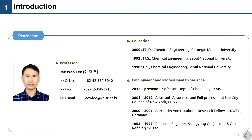Our professor, J.U. Lee, got a philosophy of doctoral degree at Carnegie Mellon University. After post-doctoral research at RWTH Aachen University, he started to work as a professor at City College of New York for 11 years. Then he moved from CUNY to KAIS in 2012, where he established our laboratory and started to study energy systems and materials design.